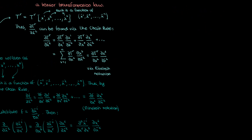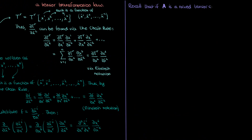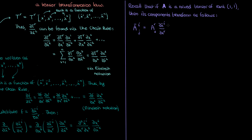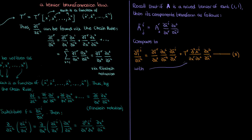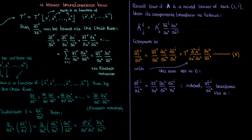Let's go back to a previous video to talk about that mixed tensor. Remember that if I have a mixed tensor a of contravariant rank 1 and covariant rank 1, then its components denoted by a super i sub j transform from the unbarred coordinates to the barred coordinates in a specific way. If you compare this to equation 3 with the mixed partial set to 0, you can see that the partial derivative of our tensor component with respect to a coordinate transforms like a mixed tensor of contravariant rank 1 and covariant rank 1 — as long as the mixed partial is 0.